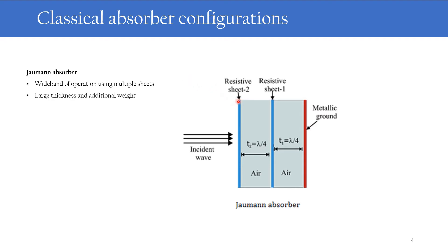The main disadvantages of the Salisbury screen are that it can provide absorption only in a narrow frequency range, and it is not promising for oblique incidence. Next is the Jaumann absorber. It is a multi-layer structure which consists of multiple layers of resistive sheets separated by a metallic ground structure. These resistive sheets are separated by lambda by 4 distance. Due to these multiple layers it can provide a wider band of operation. The resistive sheets having lesser impedance are arranged near to the metallic ground plane and the sheets having higher impedance are arranged toward free space. Because of this it allows gradual penetration of the incident electromagnetic wave. The main advantage is bandwidth improvement, while the main disadvantages are larger thickness and additional weight.